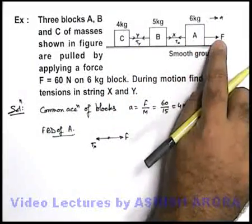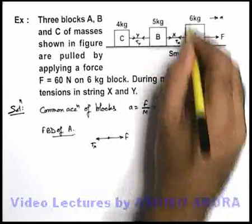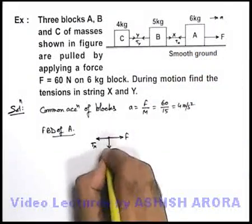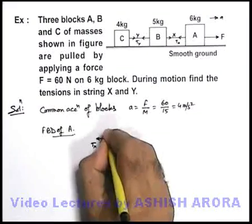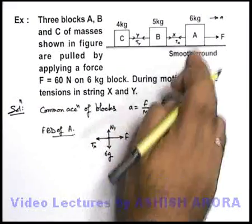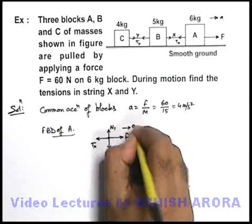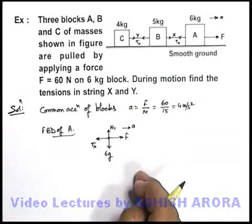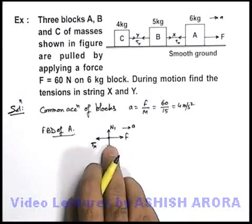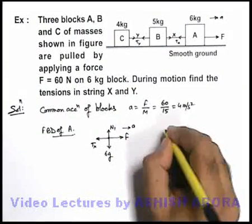So in horizontal direction it is experiencing F and T_X, in vertical direction obviously it will be experiencing 6g and a normal reaction say N1 on it by the ground. It is moving toward right with an acceleration A. So if we just write down the equation of motion for this block A, we can write